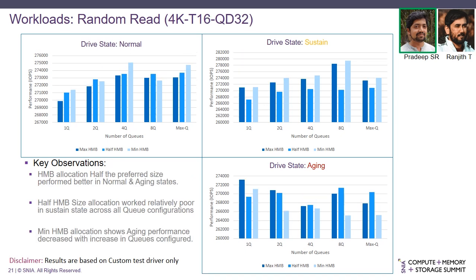In the case of random read with 4K chunk size, 16 threads, queue depth 32, across the normal and aging drive states in the majority of cases, performance was better when the configuration was equal to half the HMB size. In the sustained state, performance was relatively poor when the configuration was half HMB size. The minimum HMB allocation in the aging state shows a trend where as queue configuration kept increasing, performance decreased.